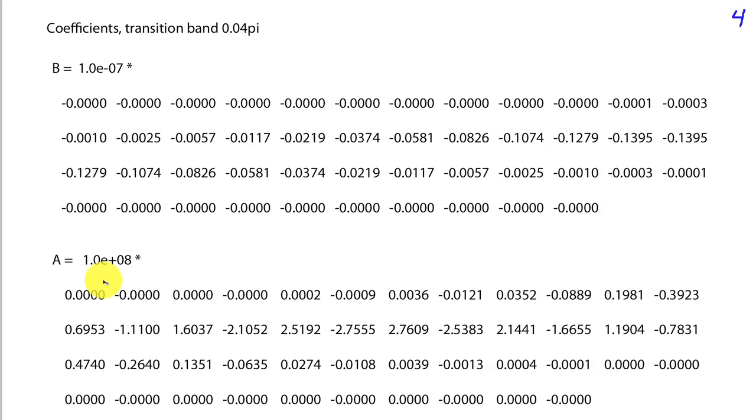And when you start to see large dynamic ranges in either denominator coefficients, those associated with the recursion, the past values of y, or extremely small values in the numerator coefficients, those are signs that your filter design is failing. And of course a 45th order IIR filter is also a bad choice because it's just too high.